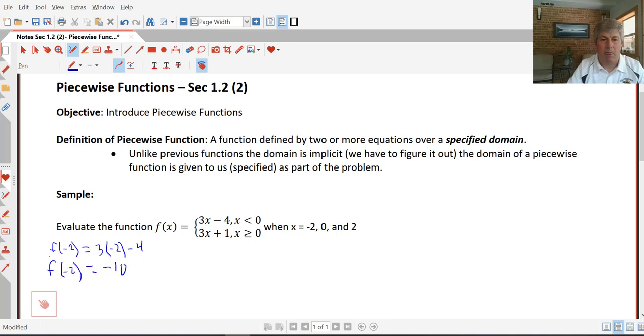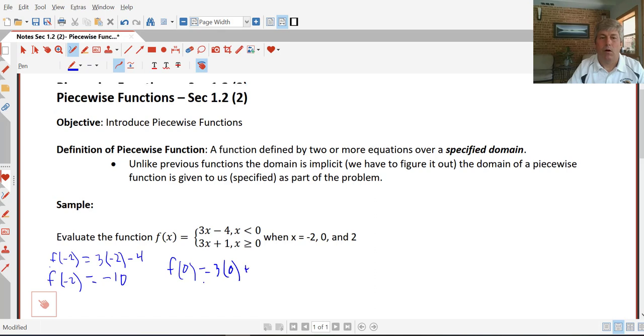For 0, we have to use the 3x plus 1 function. So f of 0 is 3 times 0 plus 1, or we get 1.